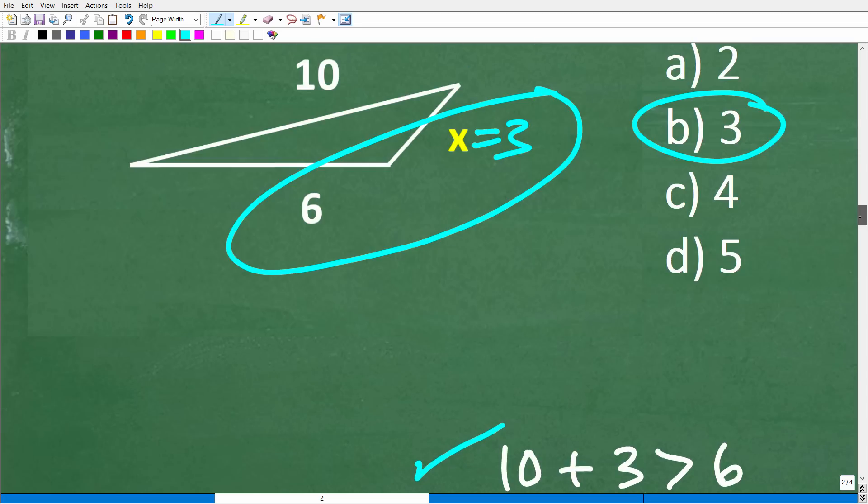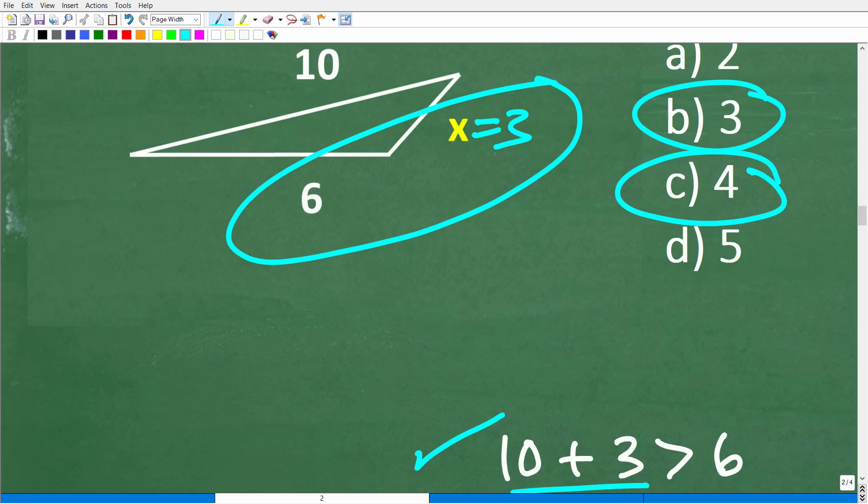So you might be saying, all right Mr. D2 Math Man, I get it. How about 4? Well, 6 plus 4, if this side's 4, that's 10. So is 10 greater than 10? No, 10 is not greater than 10. 10 is less than or equal to 10, but we're talking about this last side has to be greater, not equal to. So 4 would not work as well.